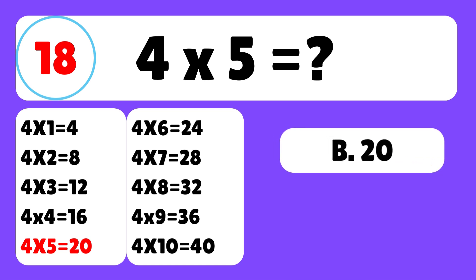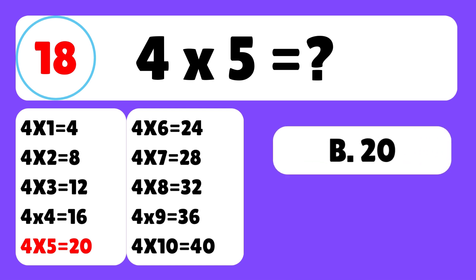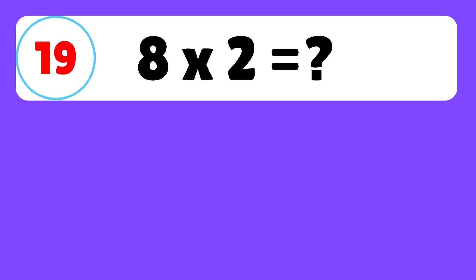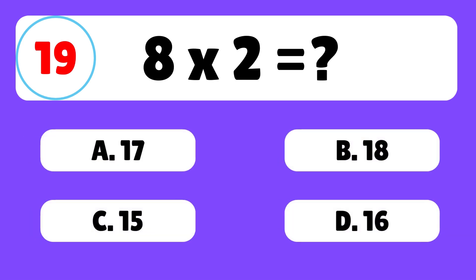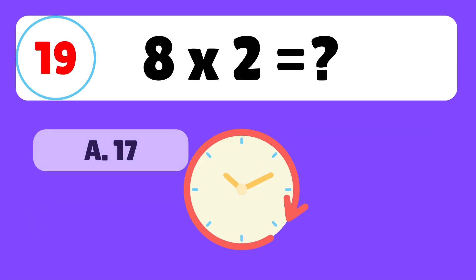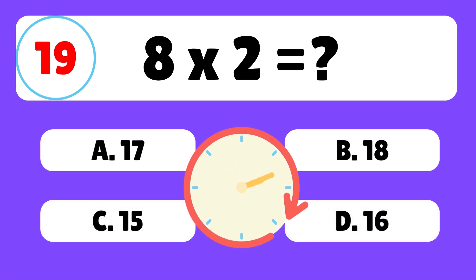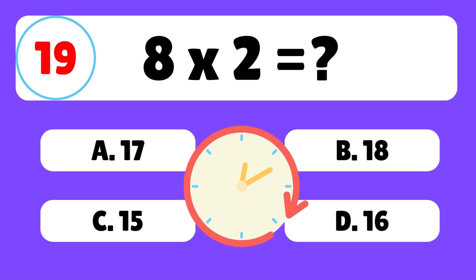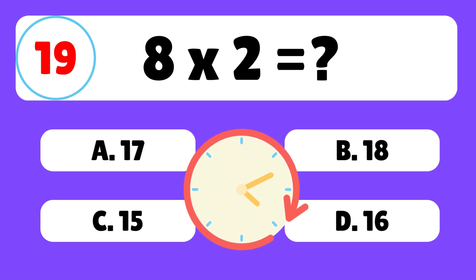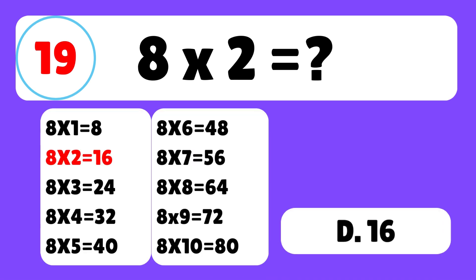Question 19. What is 8 times 2? The answer is D. 8 times 2 is equal to 16.